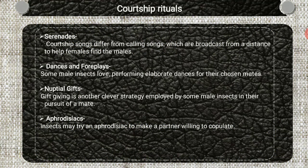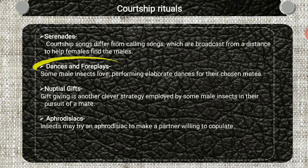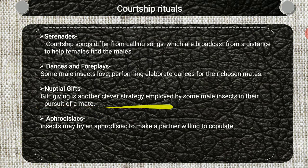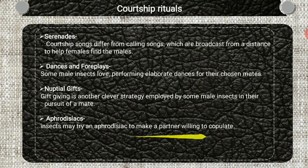Now we move on to the courtship rituals. There are four important courtship rituals. First one is awareness, meaning courtship songs — here usually males and females start courtship calls to attract mates. The courtship dance is a form of foreplay; some insects love to perform elaborate dances for their chosen mates. Nuptial gift is one of the advanced features of courtship behavior — gift giving is another clever strategy employed by some male insects in their pursuit of a mate. Pheromones: insects may use pheromones to make their partners willing to copulate.